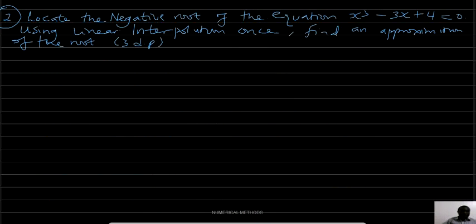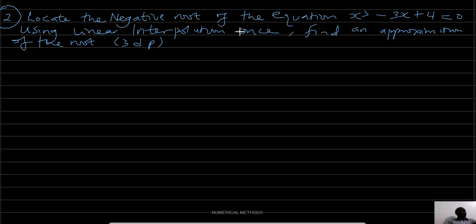Our second example: locate the negative root of the equation x³ - 3x + 4 = 0 using linear interpolation once to find an approximation of the root. Here the range is not given, so we will use trial and error.